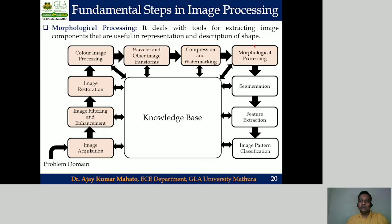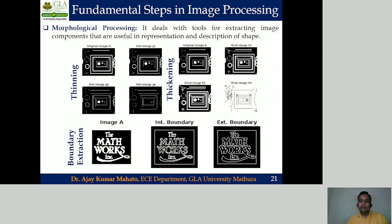The next step of digital image processing is morphological processing. In morphological processing our objective is to extract various image components useful to describe the shape of an object. Operations performed include thinning the object, thickening the object, extraction of internal boundary, extraction of external boundary, hit-or-miss image transformation, and so on.